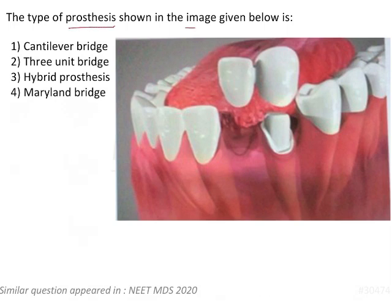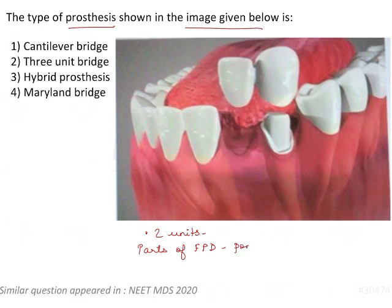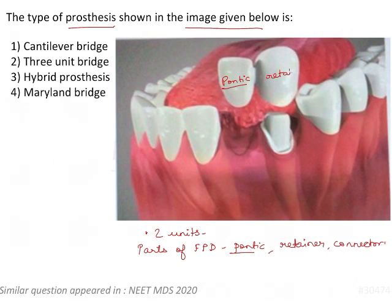The type of prosthesis shown in the image is a two-unit bridge. Let's revise the parts of FPD quickly: pontic, retainer, connector. The abutment is the tooth itself, not a part of the FPD. In the given unit there is one pontic — the tooth to be replaced in form, function, shape, size, and aesthetics — and one retainer going on the mandibular canine, which is the abutment.